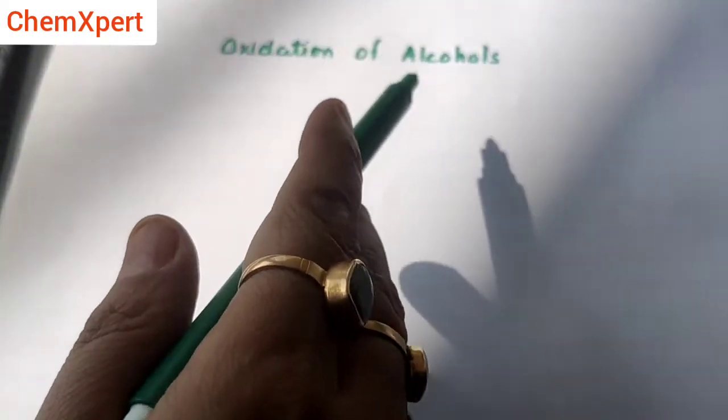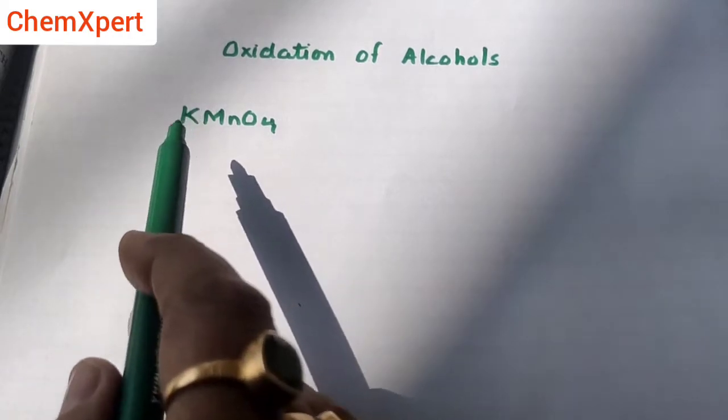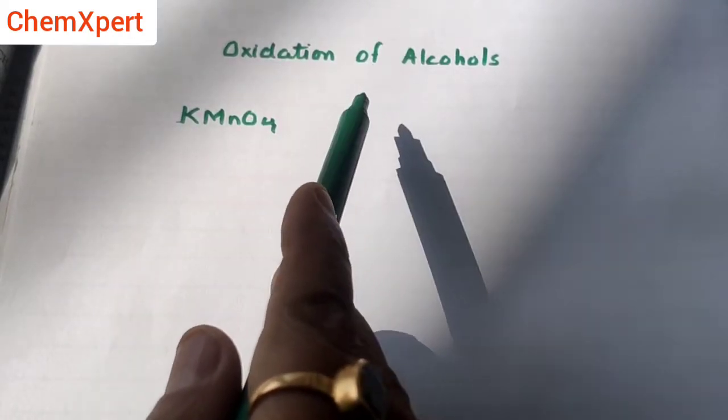The next important topic is the oxidation of alcohol. An example of a strong oxidizing agent is KMnO4, which converts alcohol into acid.